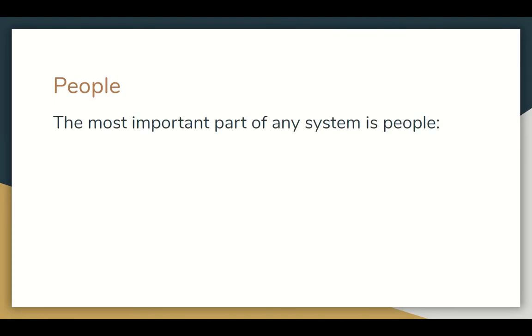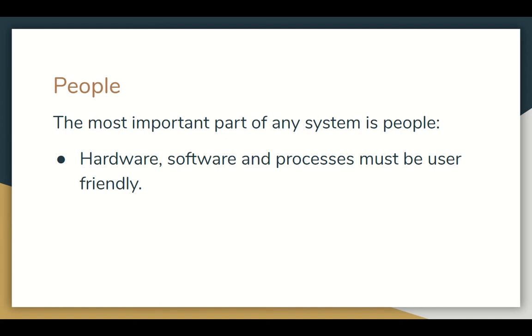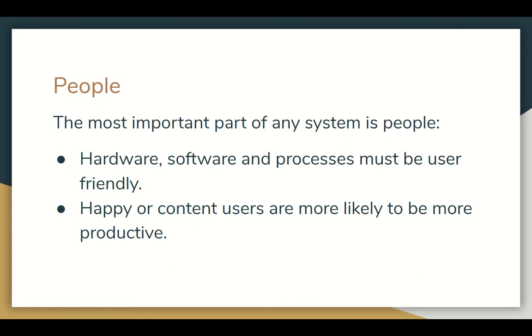Now, people are the most important part of any information system. Information systems have to be user friendly. If you want someone to do a job for you, especially a computer based job, you've got to make this job easy to do and the interface easy to use, and have a logical flow. Happy and content users are more likely to be productive.